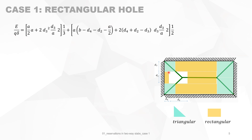On this side we have A times A over 2 as the total surface area. Instead of computing triangle by triangle, we simplify by taking the total surface of the slab multiplied by the load, then multiplied by one-third of the maximum deflection, because we have an accumulation of triangles.